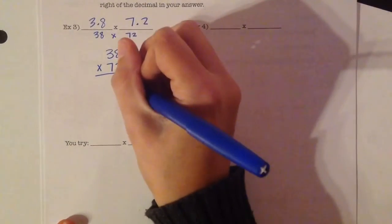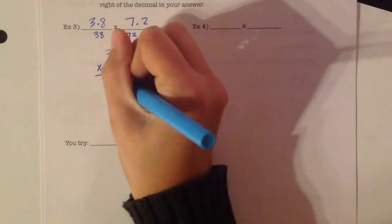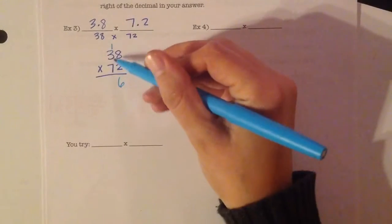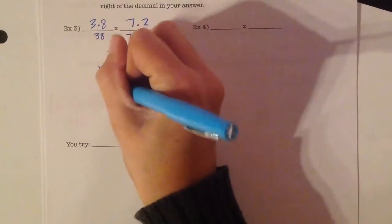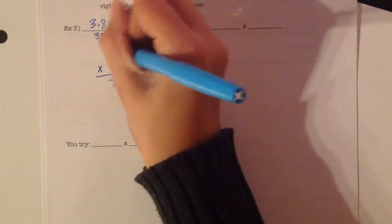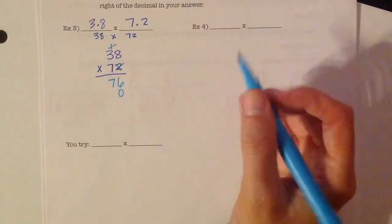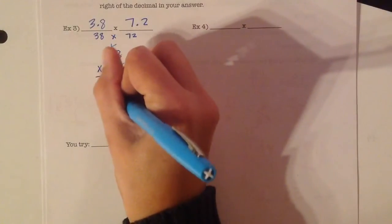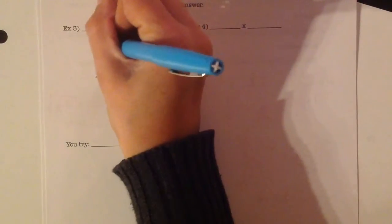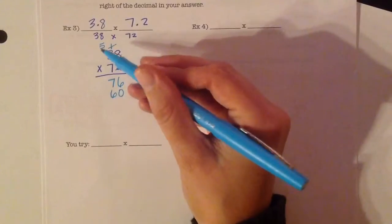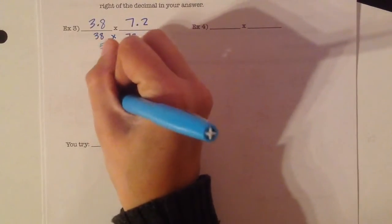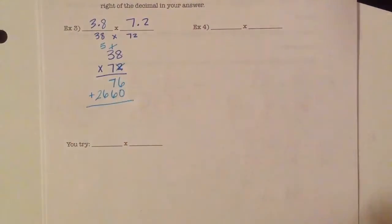So 2 times 8 is 16. So 6 carry the 1. 2 times 3 is 6 plus 1 is 7. Done with the 2. Put our 0 placeholder. 7 times 8 is 56. Carry the 5. 7 times 3 is 21 plus 5 is 26.